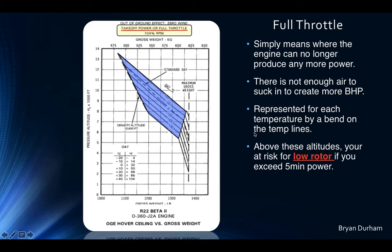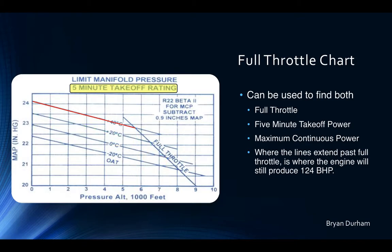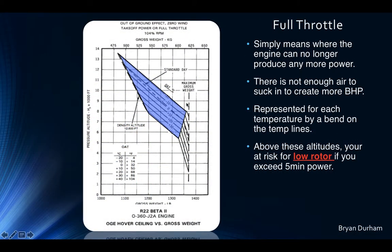The full throttle chart tells you at a given temperature what pressure altitude you will reach full throttle. At 40 degrees Celsius, following the full throttle line straight down gives approximately 5,700 feet. The bends in the line on the OGE chart, taken straight over, show roughly the same altitudes as the five-minute power chart — at 40 degrees, about 5,500 feet on the OGE chart versus 5,700 on the five-minute chart. These temperatures also correspond to the full throttle line on the OGE chart.